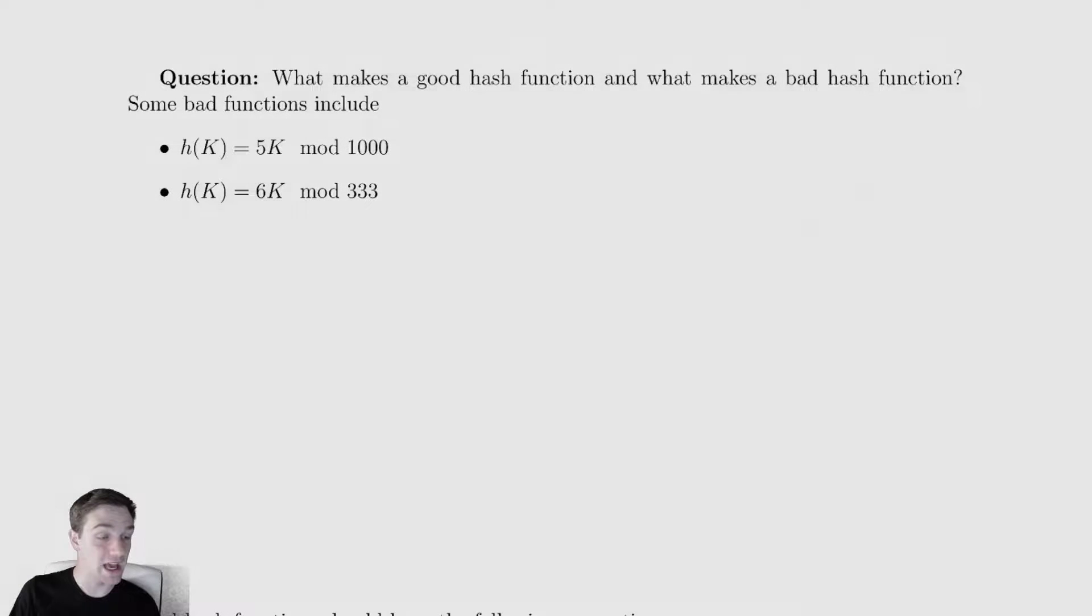Let us briefly discuss what it means to be a good hash function versus a bad hash function. Here are some examples of some really bad hash functions. These hash functions are of the modular type and the first one we've chosen is taking our key, multiplying by five, and finding its mod 1000.